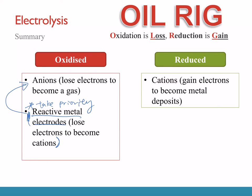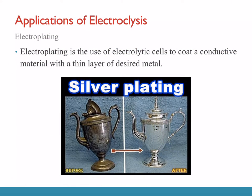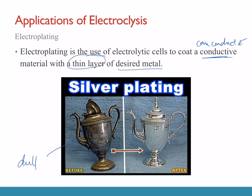Anions lose electrons to become a gas; reactive metal electrodes lose electrons to become cations. What can be reduced: only your cations. Take note — even if you have a reactive metal electrode at the negative terminal, it cannot be reduced, because for a metal, oxidation state zero is the lowest it can go. Now let's look at applications of electrolysis: electroplating. Electroplating is the use of the electrolytic cell to coat a conductive material with a thin layer of a desired metal.